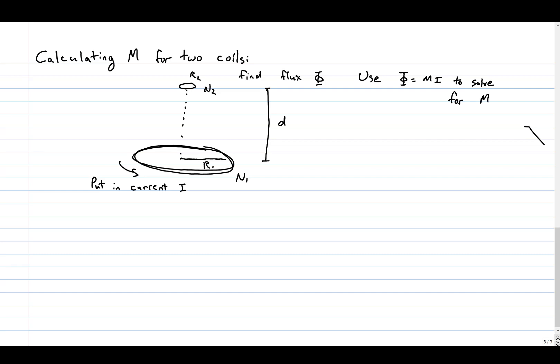If we put current I through coil 1, that coil will make a magnetic field on its axis. And since we've dealt with coils before, we'll just look up how much field it makes some distance d away in the neighborhood of coil 2. Coil 2 is relatively small, so the field made by coil 1 is pretty constant across it. And we can get the flux through coil 2 by multiplying that field by coil 2's area.